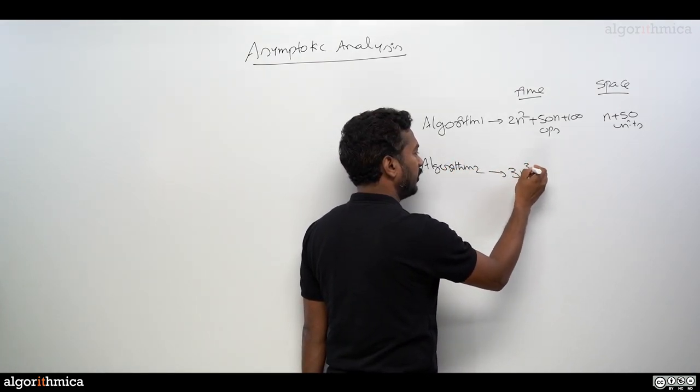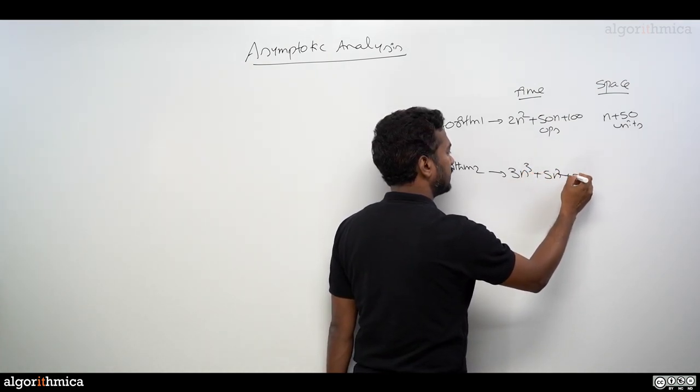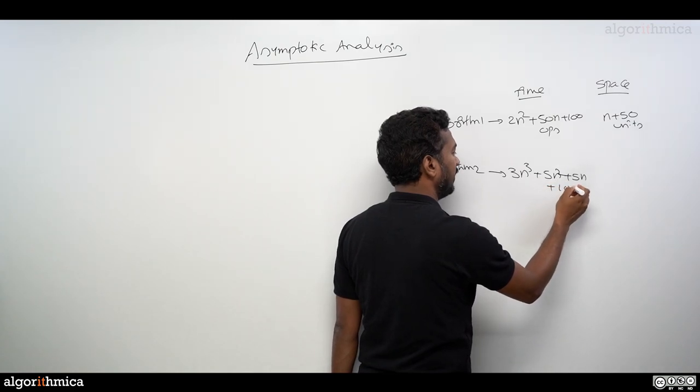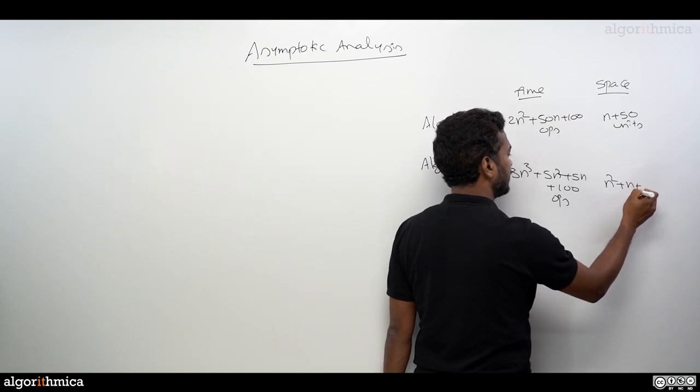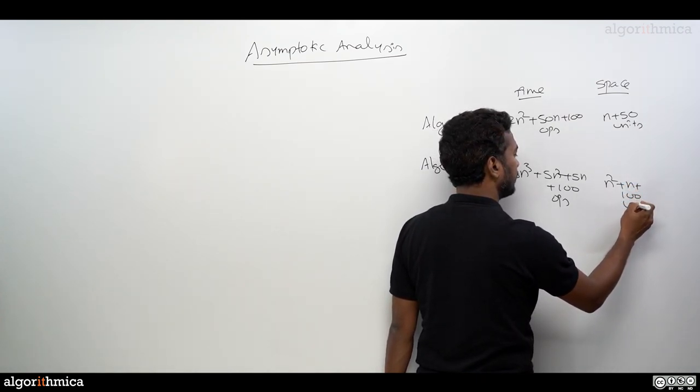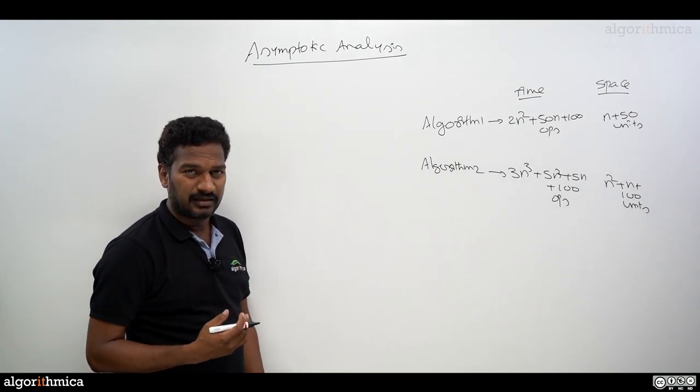There's one more algorithm, and if you count the operations here, it is taking 3n³ + 5n² + 5n + 100 operations. Space it may take as n² + n + 100 units.